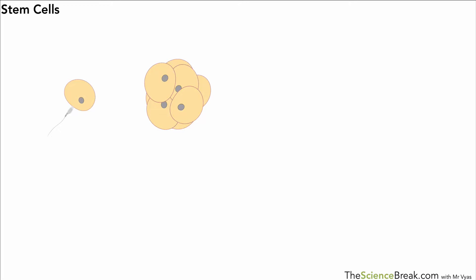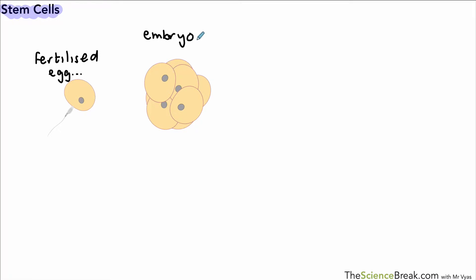Today we're looking at stem cells and their possible use for medical treatment. As an introduction to what we mean by stem cells, here we've got an example of a fertilized egg - in fact an egg that's just about to be fertilized. Under normal circumstances inside the body, when that egg is fertilized it goes on to become an embryo, which is a ball of cells.